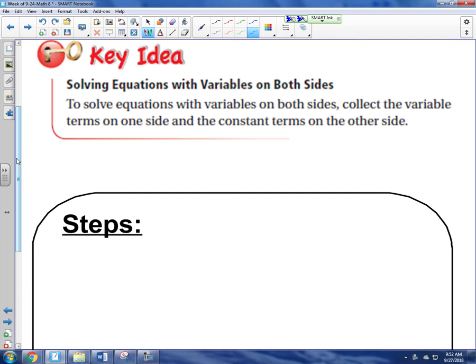So there's a couple of big ideas here that are really important. This is the key idea. To solve equations with variables on both sides, collect the variable terms on one side and the constant terms on the other side. We need to understand the difference between these two things. So can somebody please tell us what a variable term is just by an example?